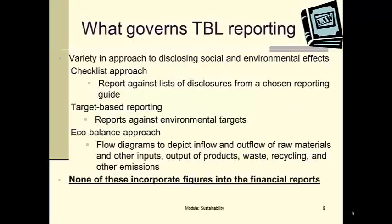There is a variety in the approach to disclosing social and environmental effects, and there are a number of ways of approaching it. You can take a checklist approach: here are a bunch of disclosures you need to make — have you made them? Alternatively, you can be more specific and say here are our environmental targets — for example, an organisation might say we do not intend to emit more than 5 kilos of carbon per given production process — and then report against those targets. Another way of dealing with triple bottom line is a diagrammatic approach, where you show inputs and outputs in terms of raw materials, wastage, products, value, and other emissions.